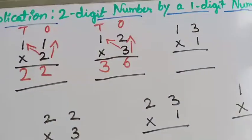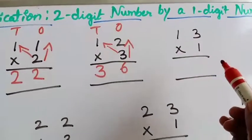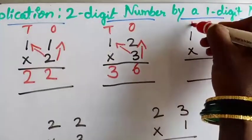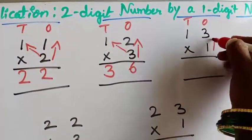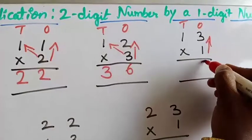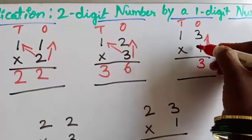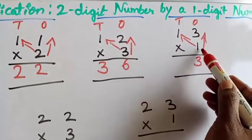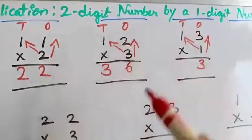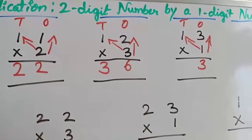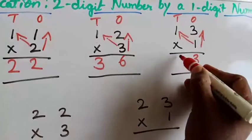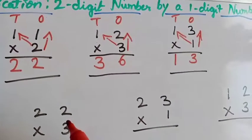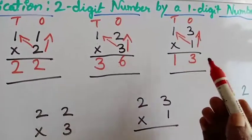The next one is 13 into 1. Write the 1's place and 10's place. Then, down to up: 1 three's are 3. Then, from 1's place to 10's place — cross — 1 one's are 1. Write it properly in the 10's place. The answer is 13.